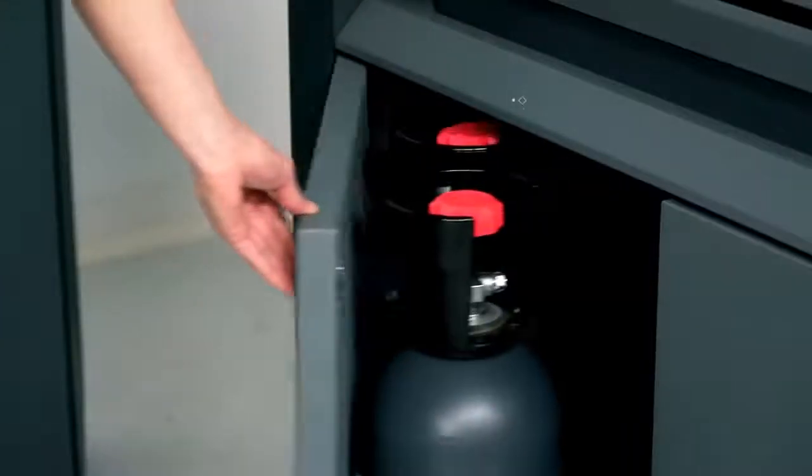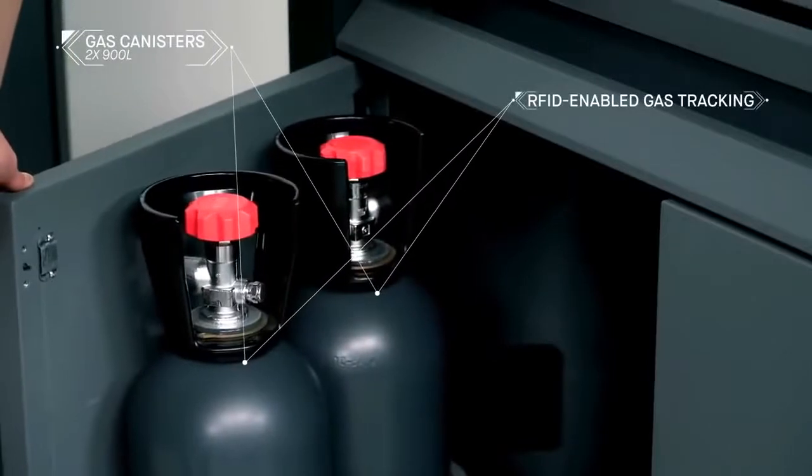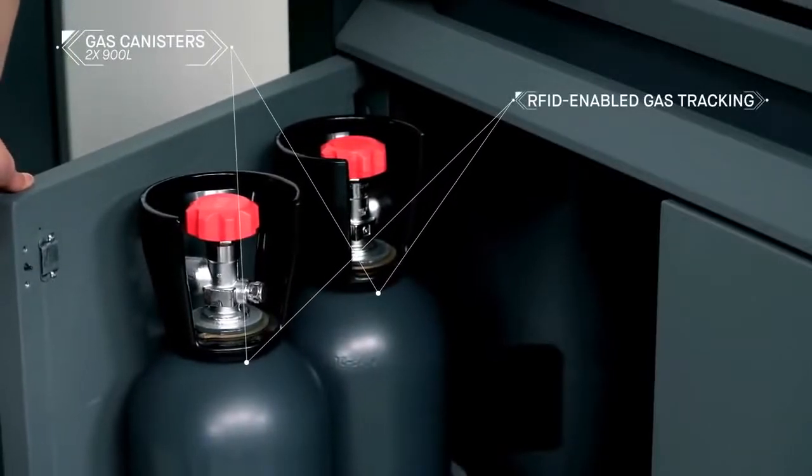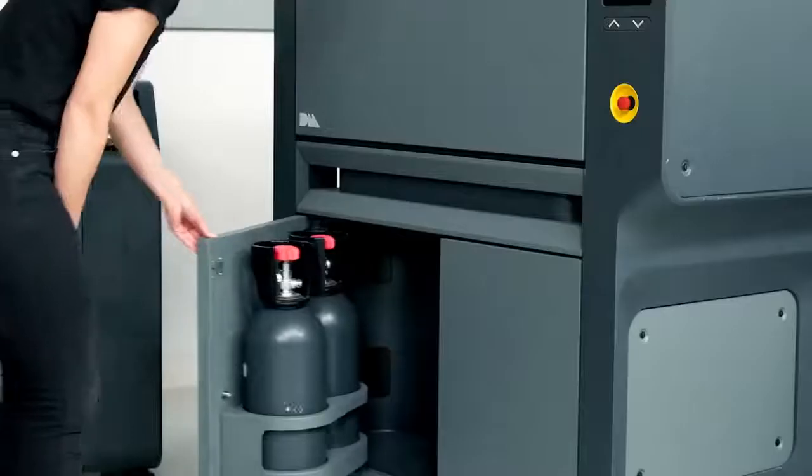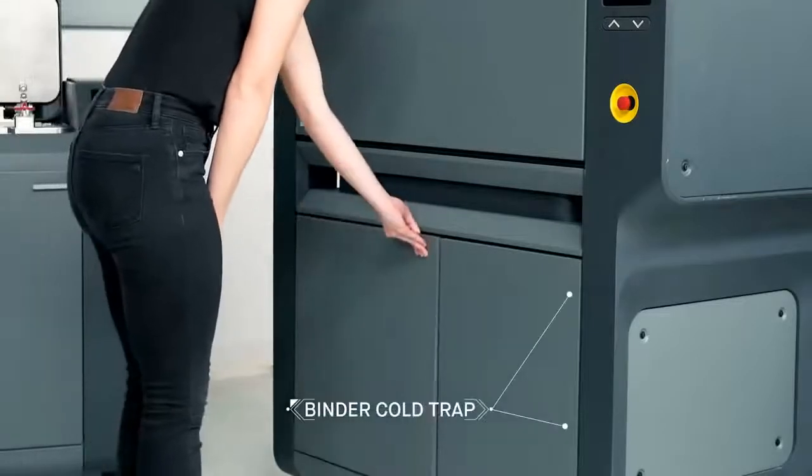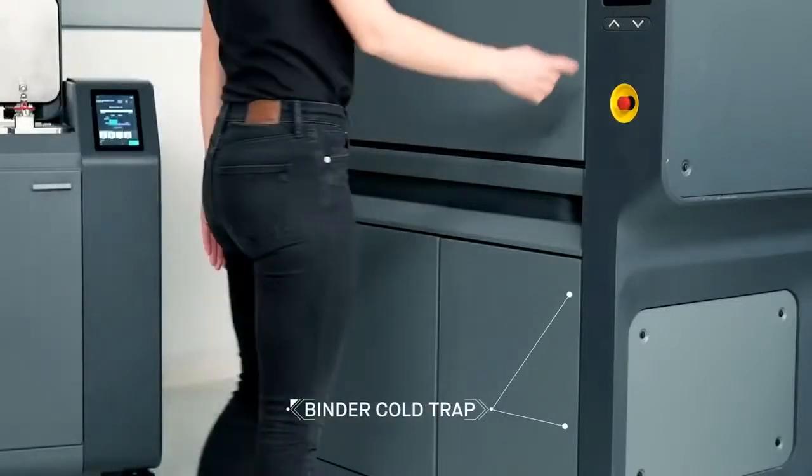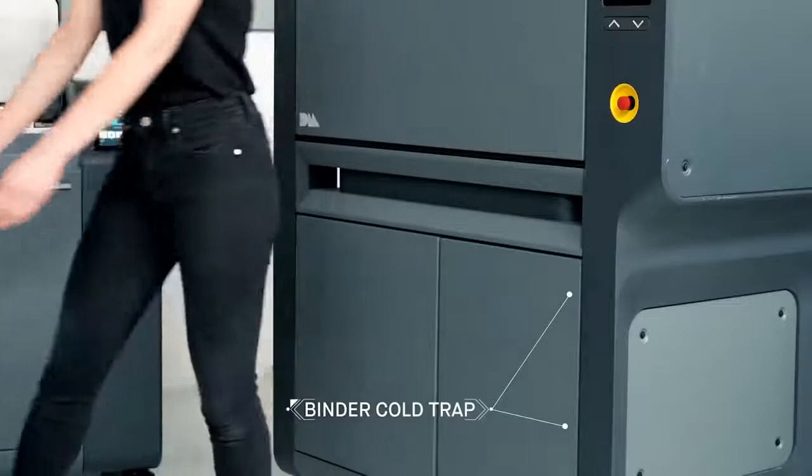The furnace features two on-board gas canisters that are easily removed and equipped with RFID tracking devices. It is equipped with a disposable binder cold-trap liner for safe and easy disposal of binder removed during sintering.